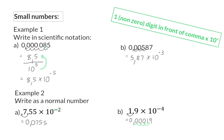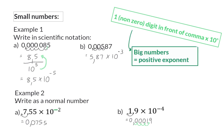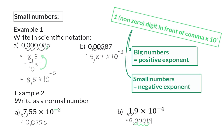So, to recap: when writing in scientific notation, it is important to have only one non-zero digit in front of the comma. For big numbers, the exponent will always be positive, and for small numbers, the exponent will be negative.